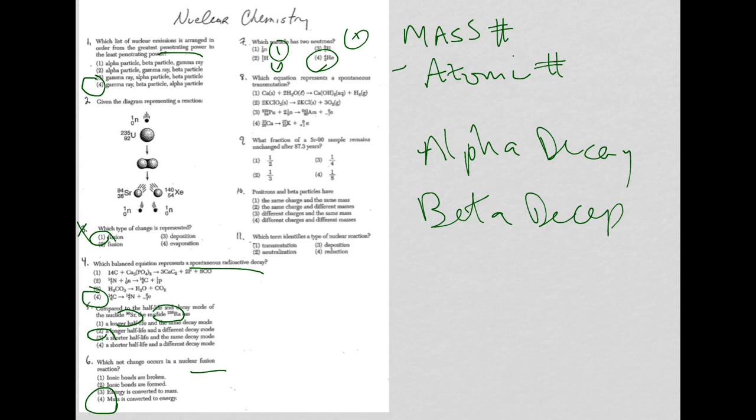For question eight: which equation represents a spontaneous transmutation? That's the same as question four. One reactant, and we're going to get either alpha or a beta particle, which could be a beta or a positron, as the only choice here, which is choice four.